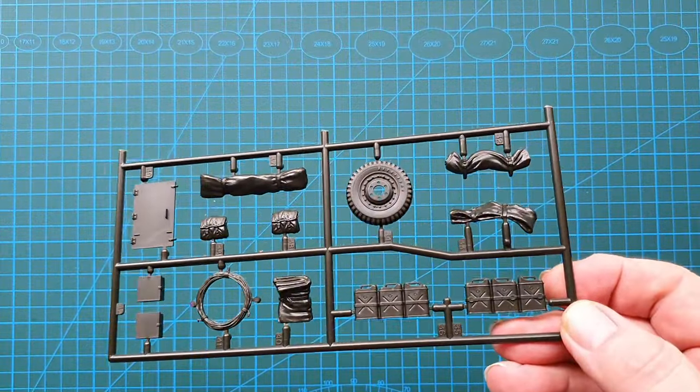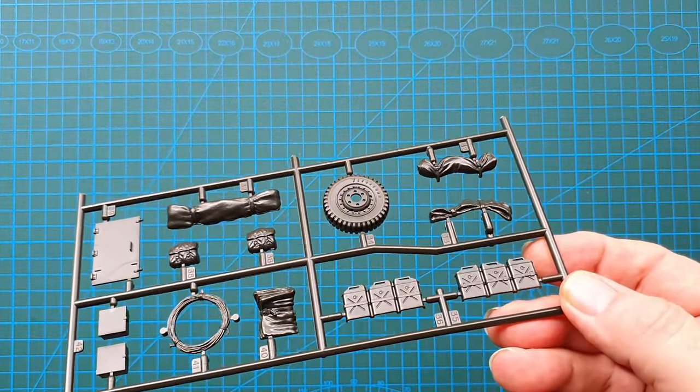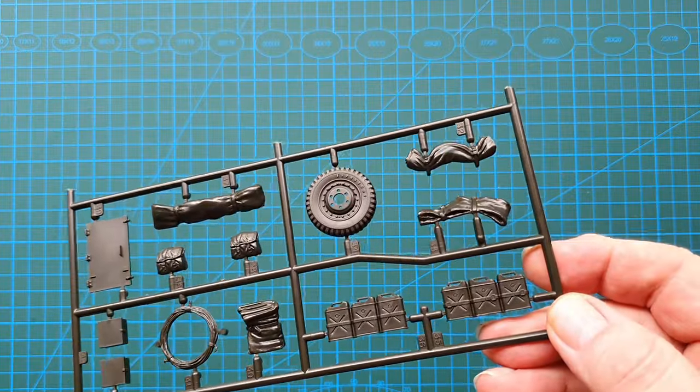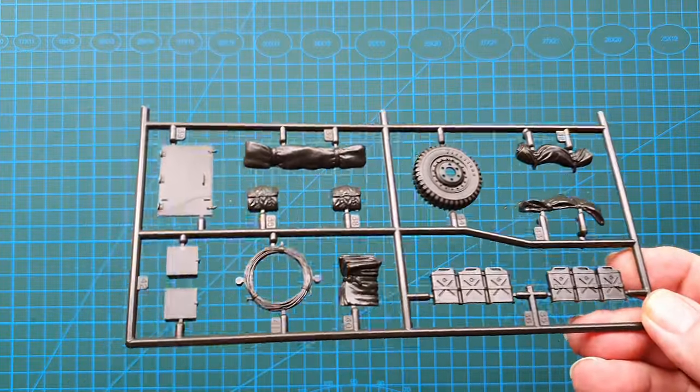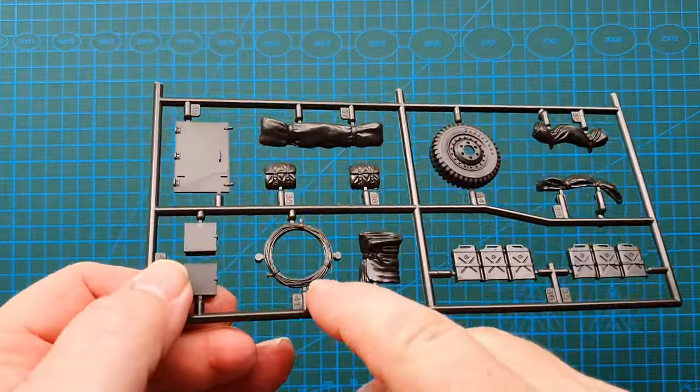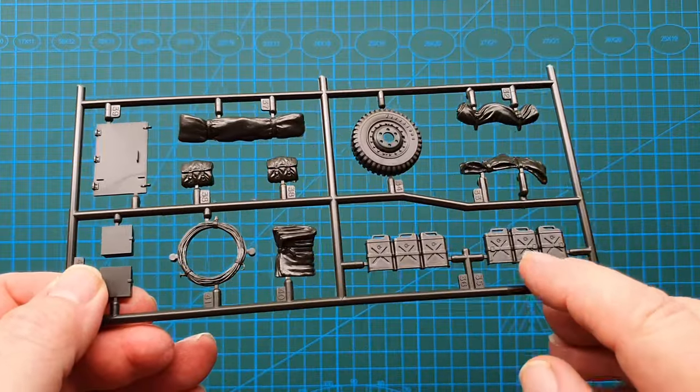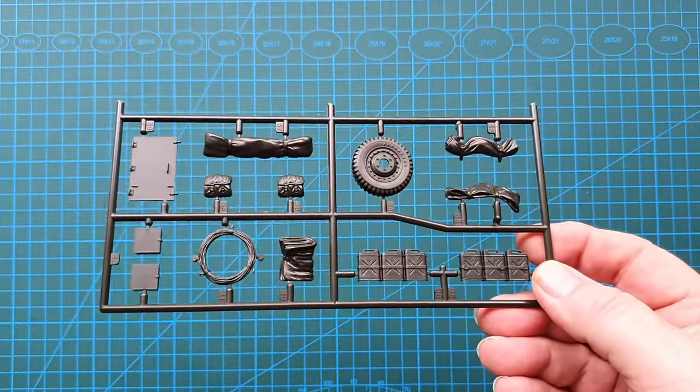Next sprue out is a little one. This is just your spare wheel, which also says Firestone, and your canvas tarps, etc. There's your wire cable and spare jerry cans for the half-track.